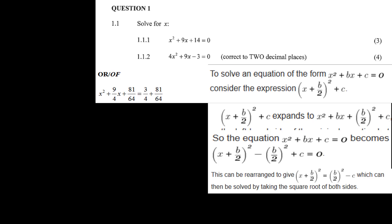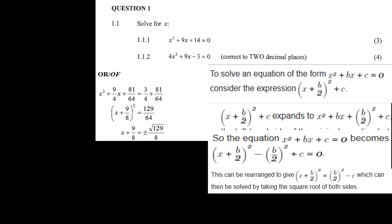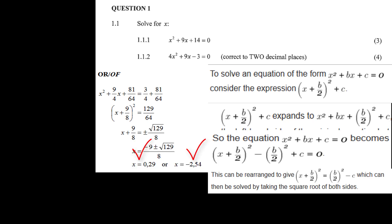Looking at our equation, first divide through by 4 to get a equals 1, b equals 9/4, and c equals 3/4. Then add (9/8) squared, or 81/64, to both sides, giving (x + 9/8) squared equals 129/64. Taking the square root of both sides, x plus 9/8 equals plus or minus the square root of 129/64, and using your calculator gives x equals 0.29 or x equals minus 2.54.